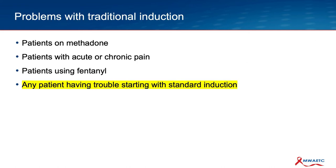There are certain populations that may have trouble with these traditional inductions. One is patients on methadone. Another is patients with chronic pain who are on opioids for pain. The other is patients using fentanyl, and the broader category is anyone who's had trouble with a standard induction in the past. It's not uncommon to have patients with opioid use disorder write off buprenorphine and say they have an allergy or tried it and it made them really sick — in all likelihood they may have taken it too early or had a precipitated withdrawal event that could hopefully be avoided.